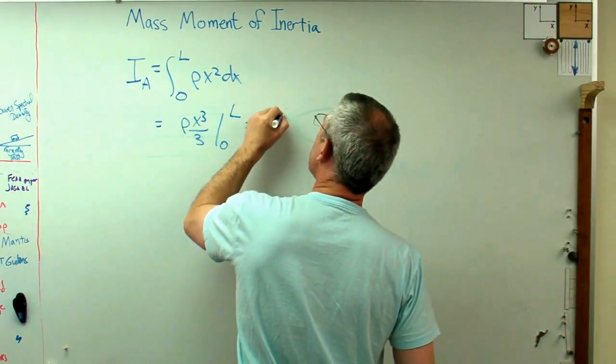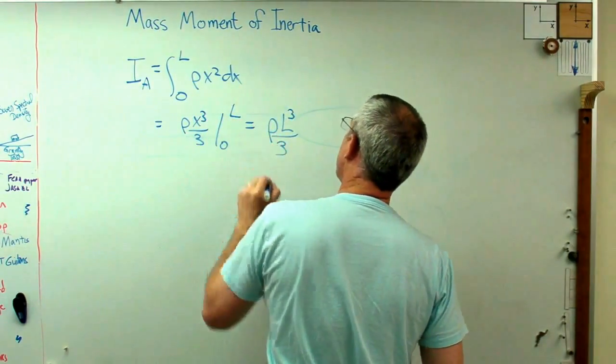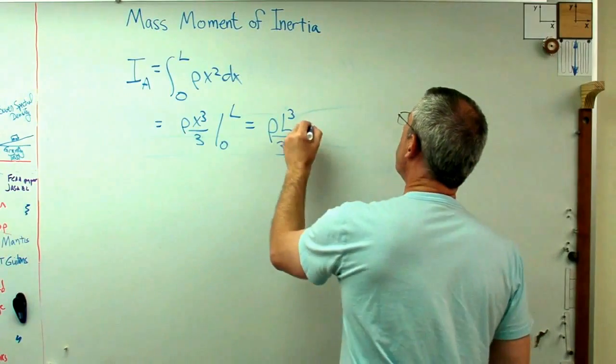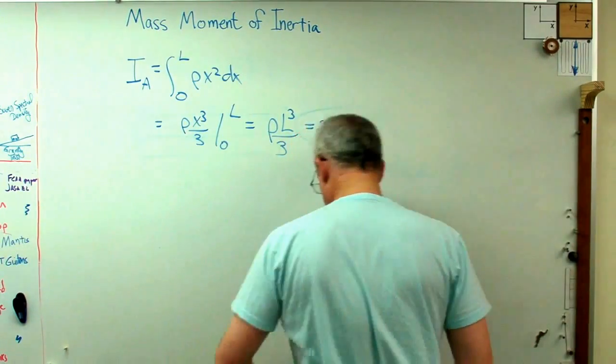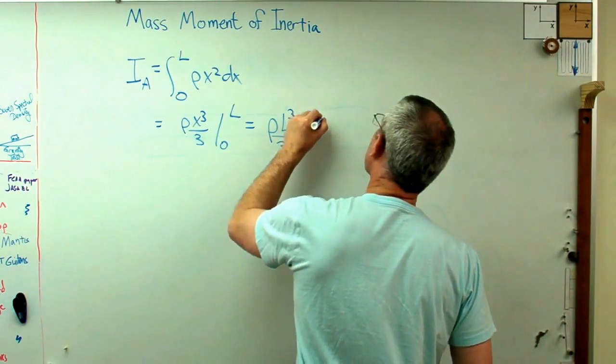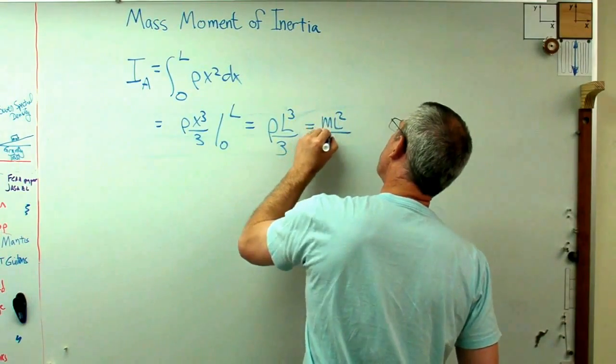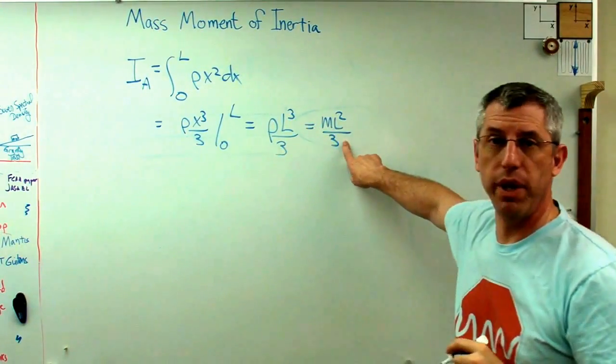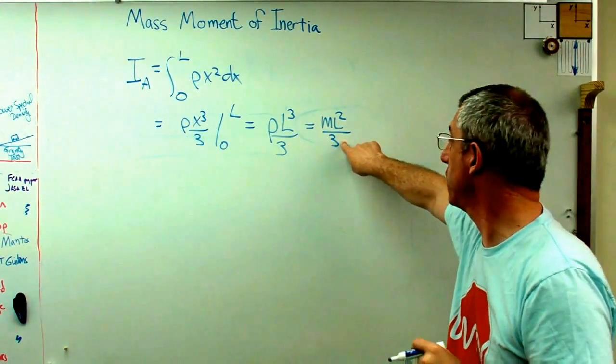If I do this, I'm going to get rho x cubed over 3 from 0 to L. Well, that's easy. That's rho L cubed over 3. Or using the same logic we had before, I have ML squared over 3.